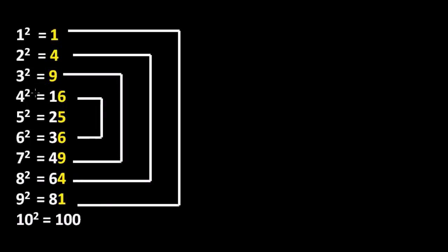With the help of math tricks we can find out the square root of any number in a few seconds. For that purpose I have written the squares from 1 to 10. So you can see square of 2 is 4, square of 3 is 9, square of 4 is 16, square of 5 is 25 and so on. Now here you can see the unit place of these squares from 1 to 9.